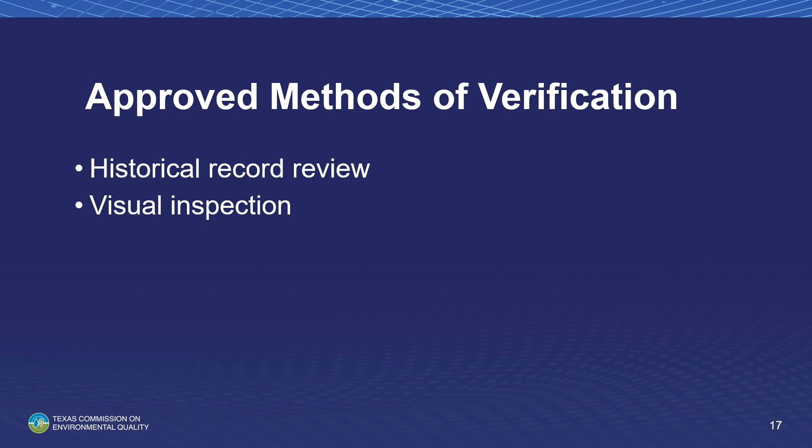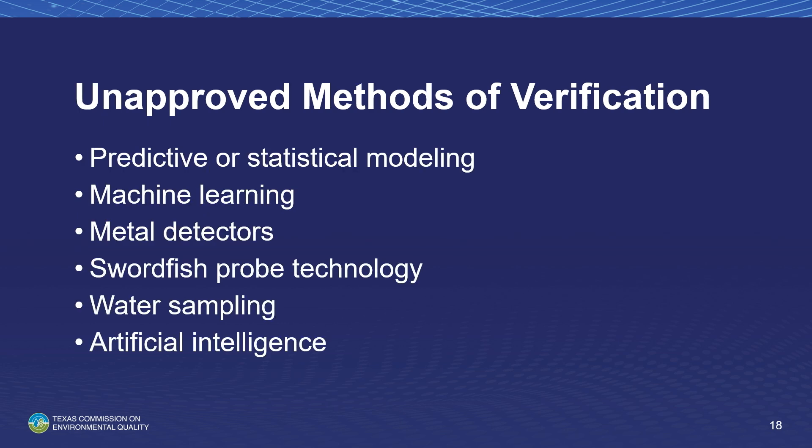Currently there are only two approved methods of verifying the material classification of service lines. Historical record review is required and approved as a method to confirm service line material. Visual inspection is also approved but not required at this time, and does not replace the record review requirement. All other methods are not approved by the TCEQ and cannot be used to confirm material classification. Unapproved methods include: predictive or statistical modeling, machine learning, metal detectors, swordfish probe technology, water sampling, and any other artificial intelligence.